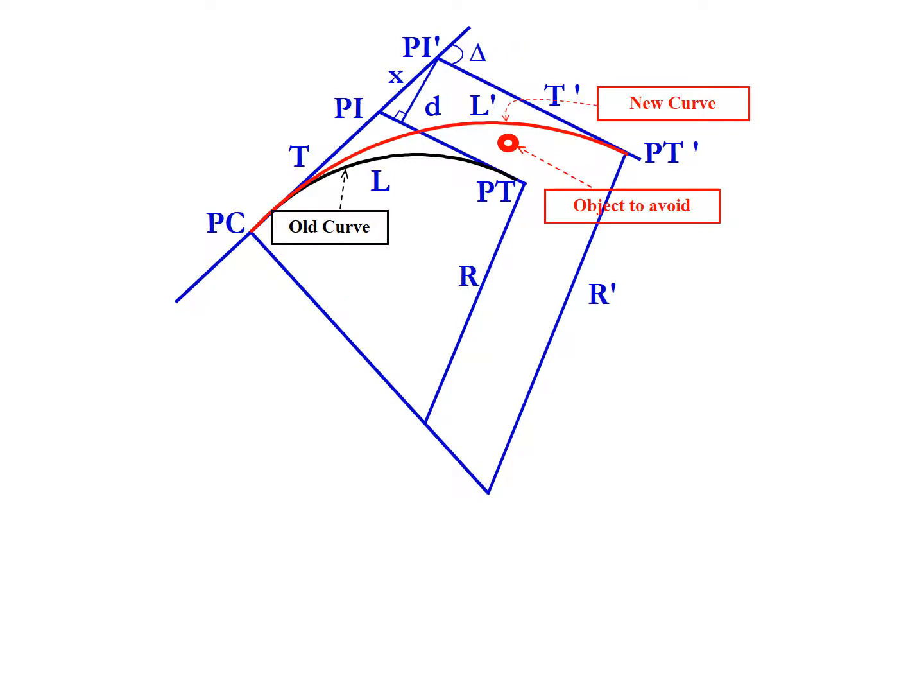In this image we see the object that needs to be avoided and an old curve that would have been in place if that alignment was used. But with a new curve, a new length, new tangent, new PI, new PT, and new radius will be put into place to avoid that object.